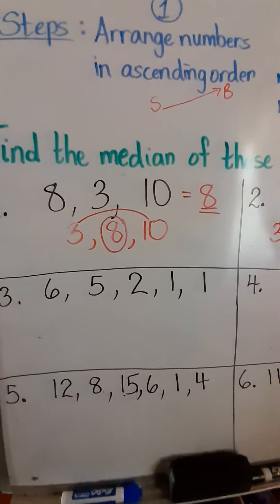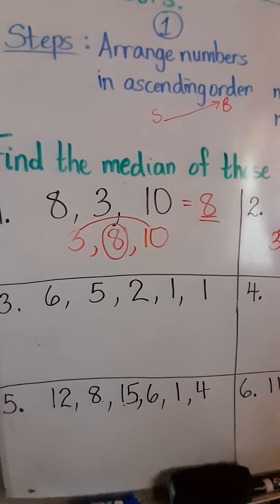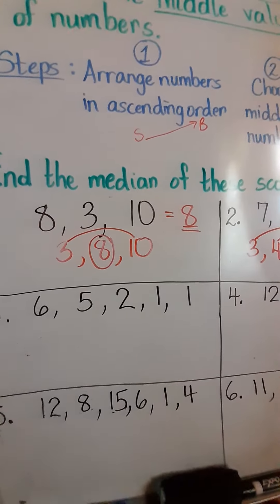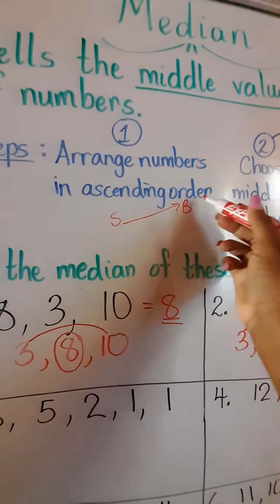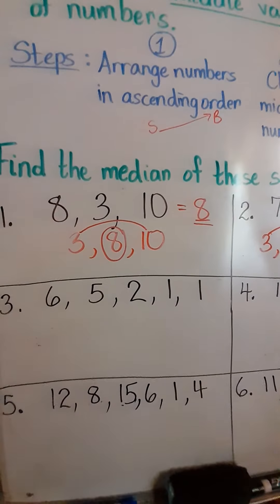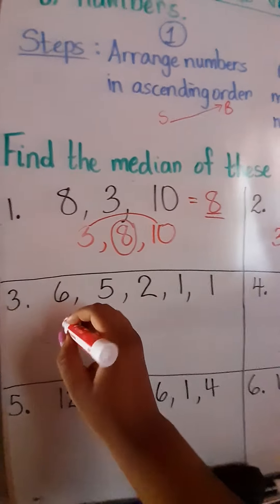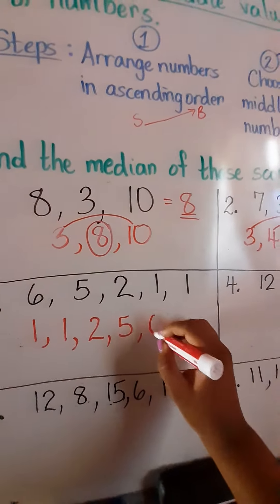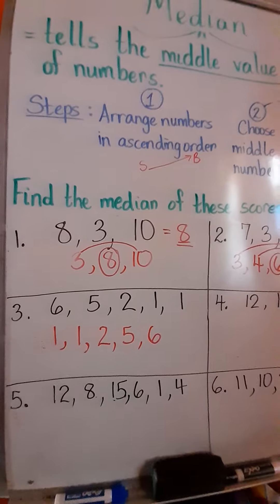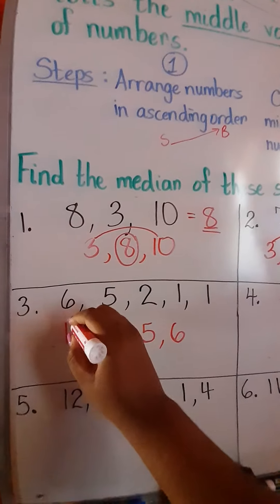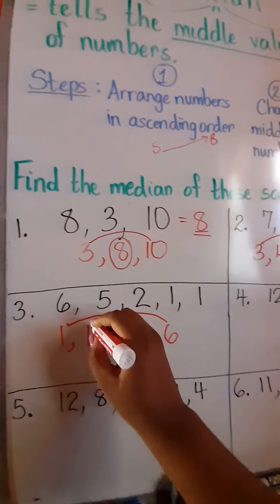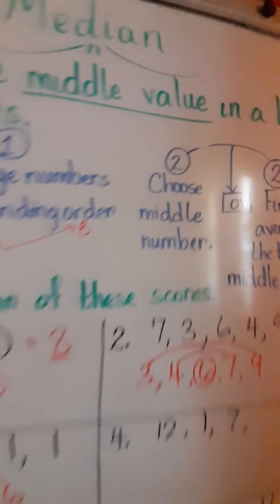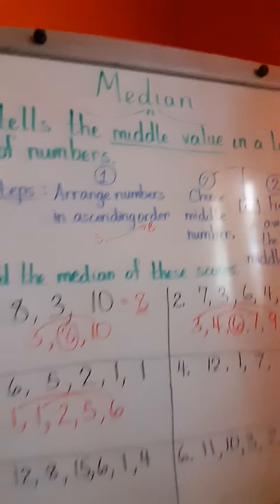Let's look at number 3. The scores are 6, 5, 2, 1, and 1. We arrange these in order from smallest to biggest. The smallest number is 1, and we have two 1's, so we keep both: 1, 1, then 2, 5, and 6. Now we bridge: 1 and 6 bridge, 1 and 5 bridge, but 2 stands alone. So we choose 2 as our middle number — 2 is our median.